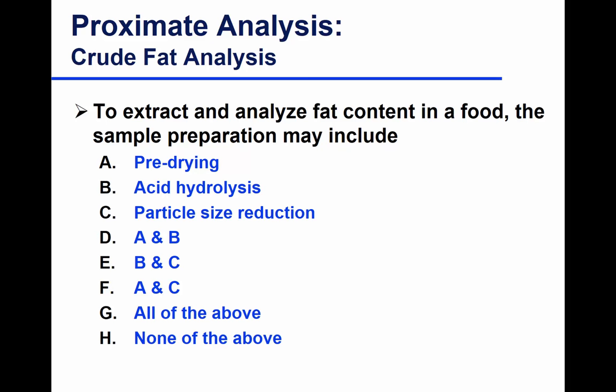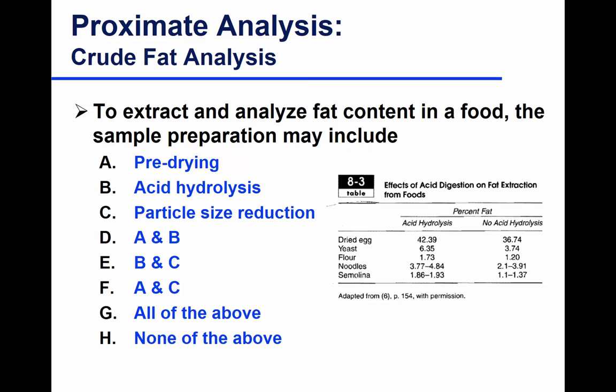This table from your chapter highlights the significance of acid hydrolysis. Looking at these products, you detect more fat when you hydrolyze the sample, because you're breaking up protein, breaking up carbohydrate, and releasing the fat from your complex matrix. However, if you're running Soxhlet, it's hard to hydrolyze first — you don't want a liquid sample in your thimble, since thimbles are porous. So depending on equipment, in all cases acid hydrolysis gives better fat extraction.